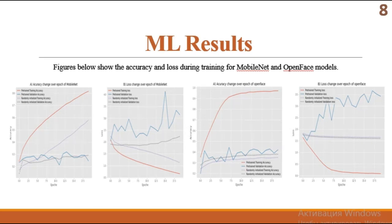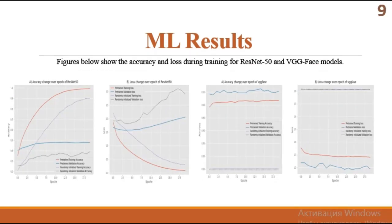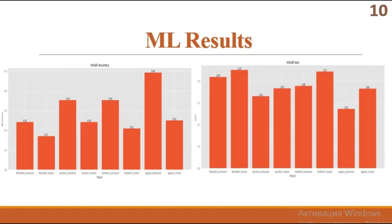So let's proceed to the results. Figures below show the accuracy and loss during training of MobileNet and OpenFace. As we can see, for both networks, pre-training greatly affects network performance during its learning process. The same trend remains within the process of training of larger networks such as ResNet-50 and VGGFace. The graphs of their training processes are shown below. On this slide, we can see the initial accuracy and initial loss of each network. Accuracy is higher for pre-trained networks, and face recognition-based models show better initial performance, so their weights are more suitable for FER tasks.